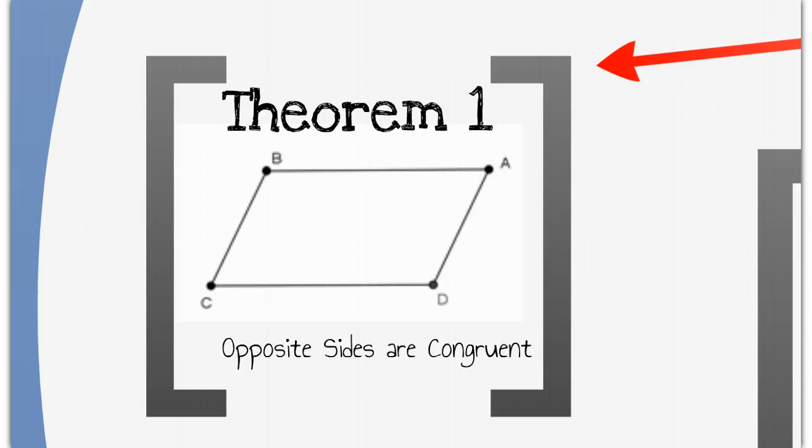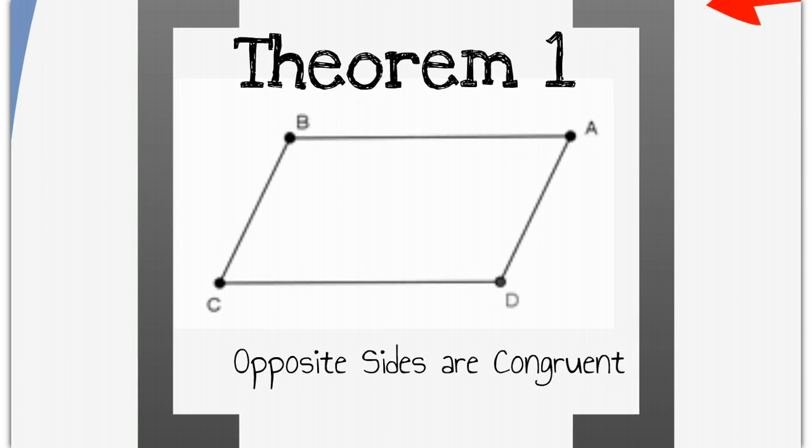The first thing we're going to learn about parallelograms is that the opposite sides of a parallelogram are always congruent. Very easy to show - all you need to do is draw in the diagonal BD. If you go from B to D and draw a line in, then you can easily show that the two triangles created, BCD and DAB, are congruent to each other using angle-side-angle and alternate interior angles.